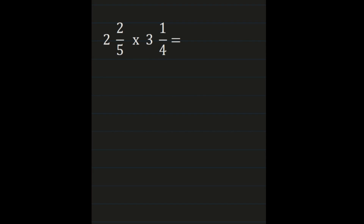Let's look at another example multiplying a mixed number times a mixed number. We again turn the mixed numbers into improper fractions. For 2 and 2/5: 5 times 2 is 10, plus the numerator 2 gives us 12. So 12 becomes our new numerator and the denominator of 5 remains the same.